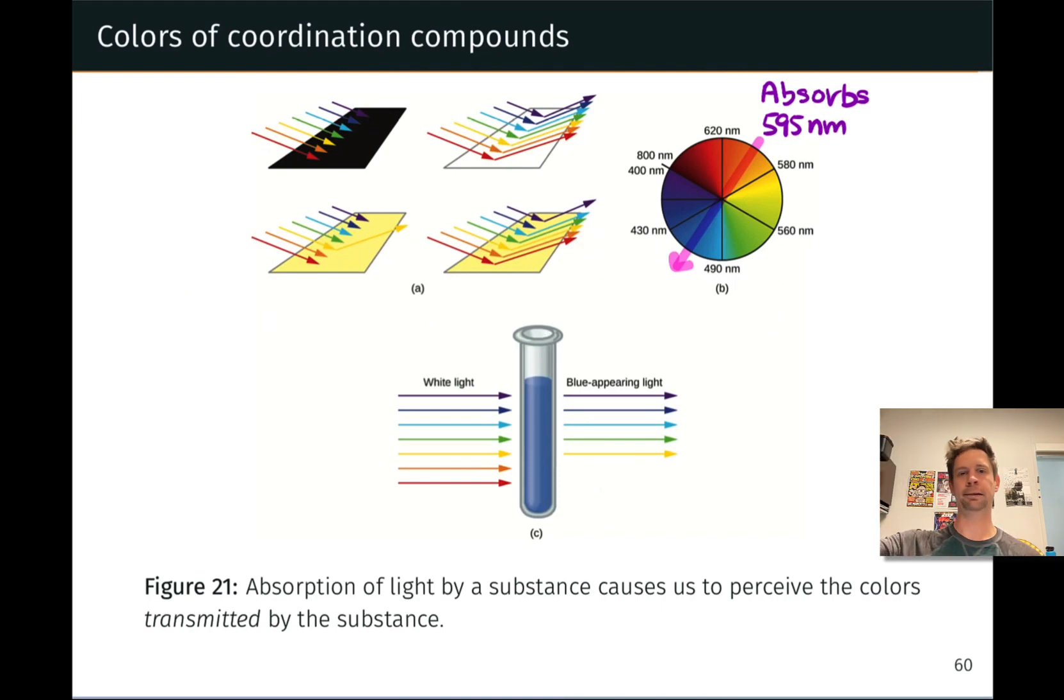So for example, as we increase the field strength of the ligand going from something like iodide to water to carbon monoxide, we are decreasing or shortening the wavelength of light absorbed since the crystal field splitting gap is going up. So we're moving around the color wheel kind of in this direction. And this causes the appearance, the color of the complex to change. So keep in mind that ligands have a big influence on the colors of transition metal complexes via effects on the crystal field splitting energy.